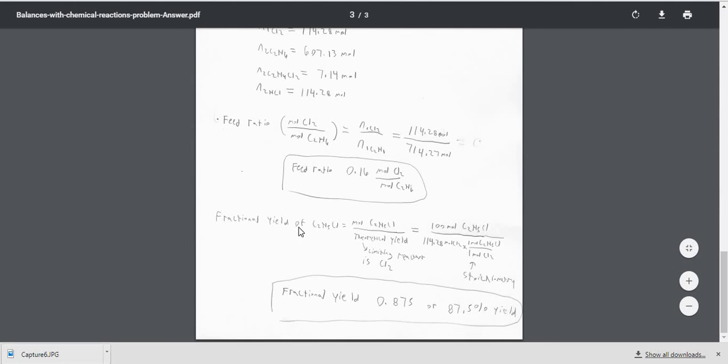And for fractional yield, we're going to look at the moles of C2H5Cl coming out versus the theoretical yield. And the theoretical yield is based on chlorine being the limited reactant, because it is. And since we're putting in 114.28 moles of Cl2, and for every one Cl2 we get one C2H5Cl, we can get the theoretical yield of amount of C2H5Cl to also be 114.28 moles. So taking those two numbers, we get a fraction of yield of 0.875 or about 87.5% yield.